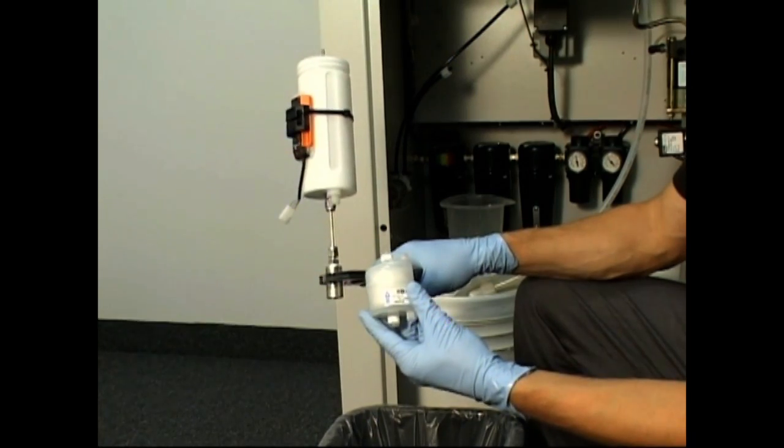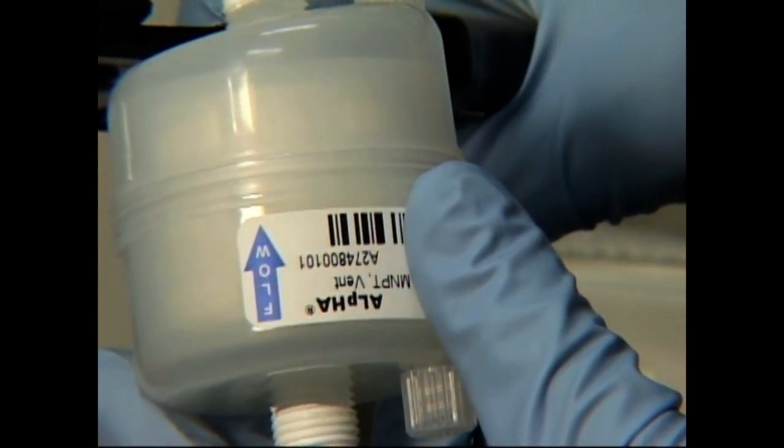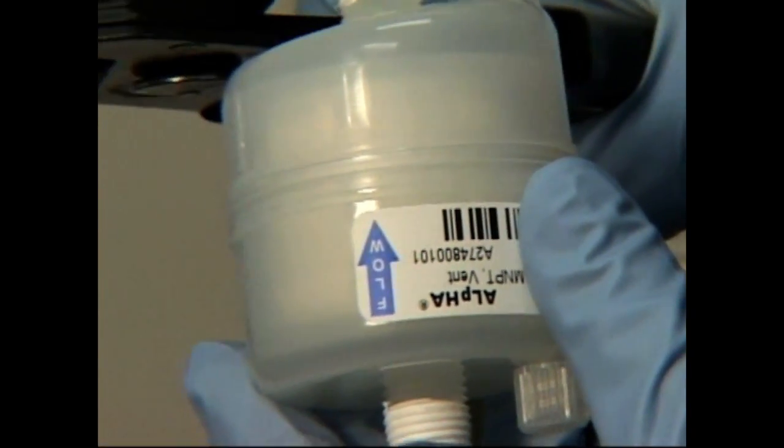Thread the new filter back onto the reservoir and put the elbow back on the bottom of the filter. Note that the flow arrow on the filter should be facing up.